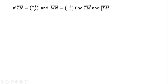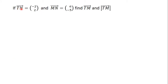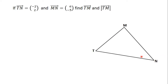The three points concerned here are T, N and M. I will use those three points to draw a diagram. The vector we are looking for is TM, so that will be our resultant vector. From the triangular law of vector addition, vector TM is equal to vector TN plus vector NM.